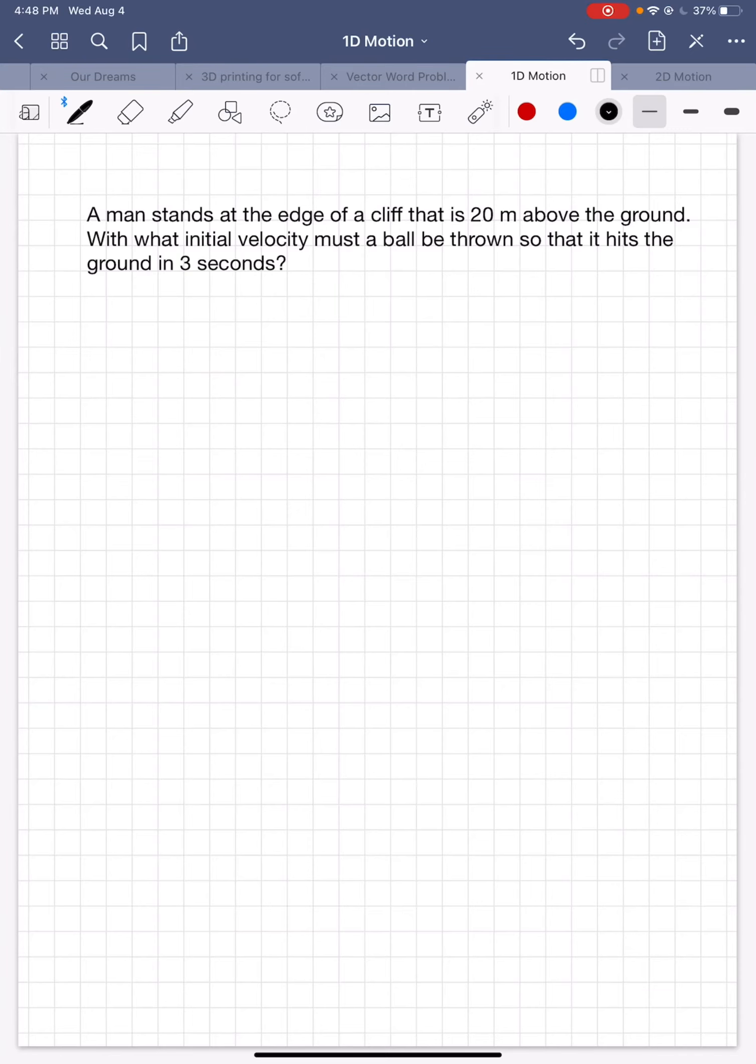All right, hello everybody. I want to do another word problem today. Today is one-dimensional motion and free fall. So let's read the problem. A man stands at the edge of a cliff that's 20 meters above the ground. With what initial velocity must a ball be thrown so that it hits the ground in three seconds?